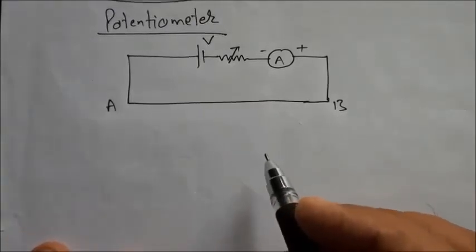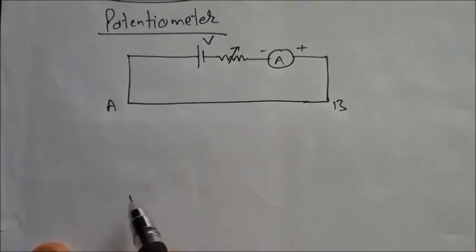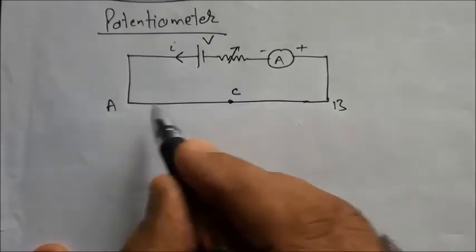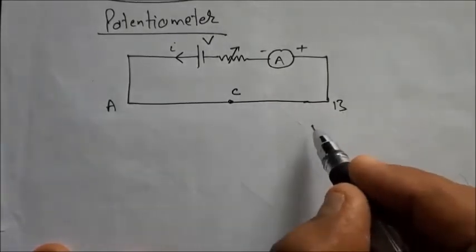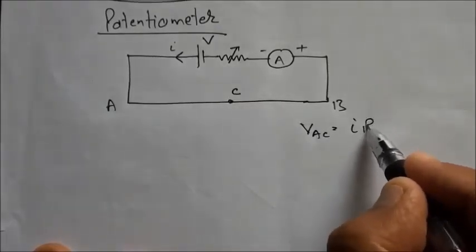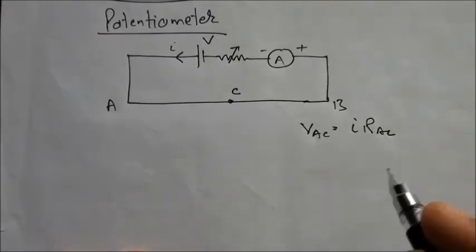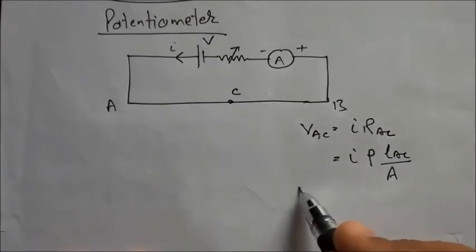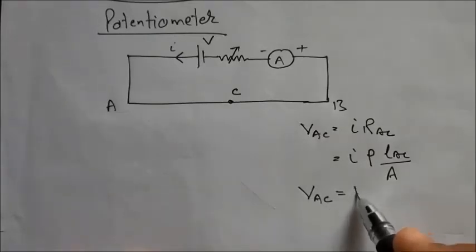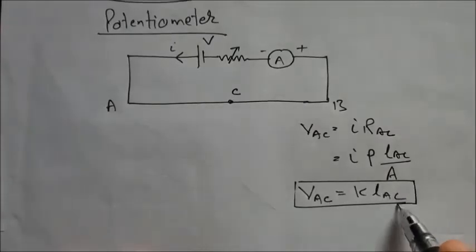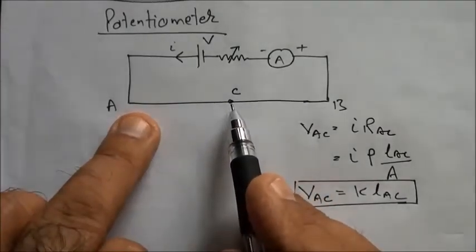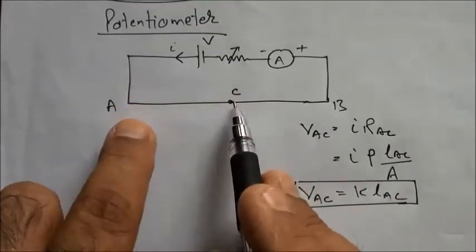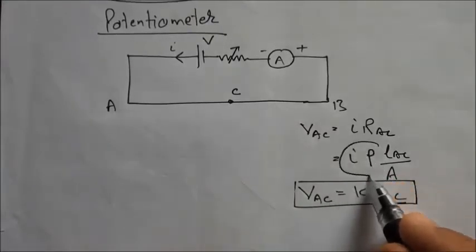Let us first see the principle on which this device works. We have to measure the potential using this device. The positive terminal is here, so current flows through this wire. If we take any two points, say A and C, the potential difference between them equals current multiplied by resistance of AC. So the potential difference between two points is proportional to the length of that section of the wire, provided these quantities remain constant.